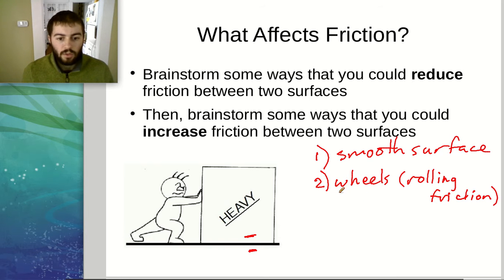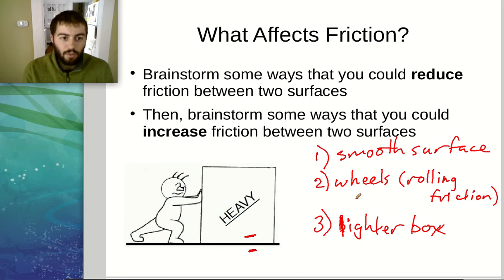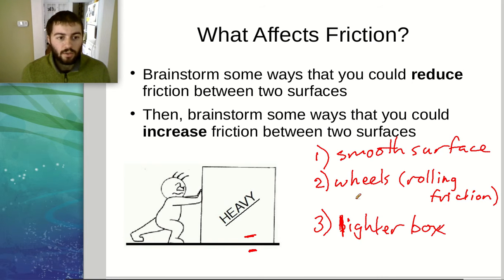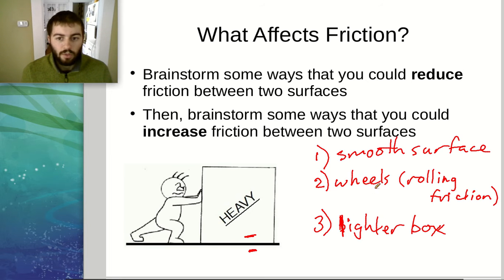Kind of a cheating way would be to make the box lighter. If we make the box lighter, there won't be as much friction. If you push an empty cardboard box across the floor, it's really easy. But if you put heavy weights into it, it's a lot harder to push. That's because friction has to do with the amount of normal force pushing on the box. The heavier the box, the more normal force there's going to be and the more friction. The lighter the box, the less normal force and the less friction.